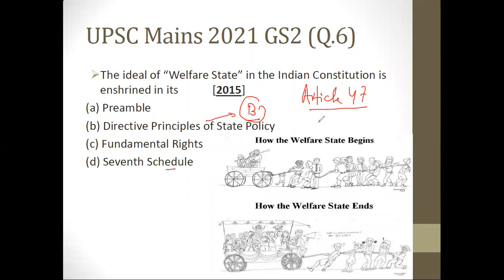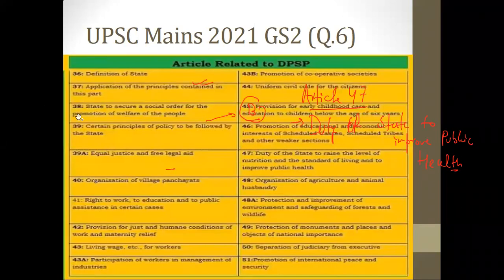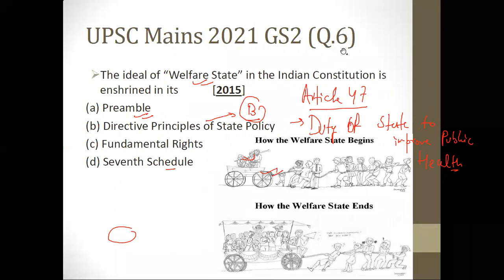Article 47 in our Constitution talks about the duty of the state to improve public health. There are also Article 38 and Article 42 — all enshrining the idea of welfare state. Article 38 is about securing social order for the promotion of welfare of the people, Article 42 is about maternity relief, and Article 47 is about the state's duty to improve public health.